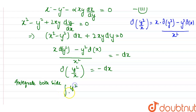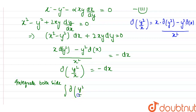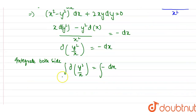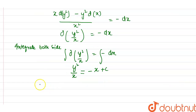Integrating d(y²/x) equals the integration of -dx. Since integration is the anti-derivative of differentiation, we get y²/x = -x + c.